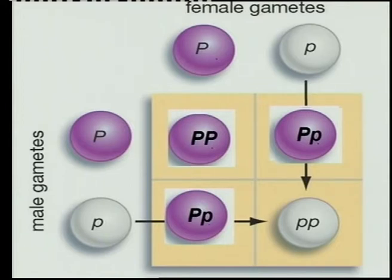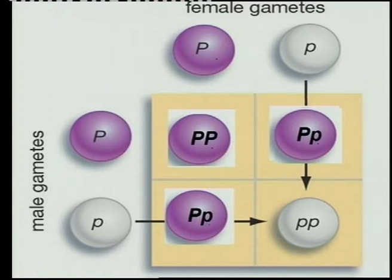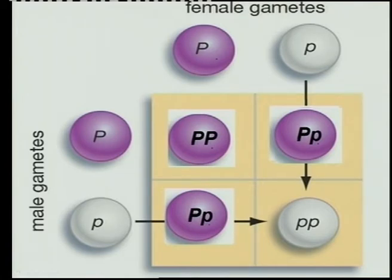When you do a crossing, you use a Punnet diagram. Remember that we have the male gametes on the left and the female gametes on the top — regardless of what books or anybody says, your males are on the left and your female gametes are on the top.